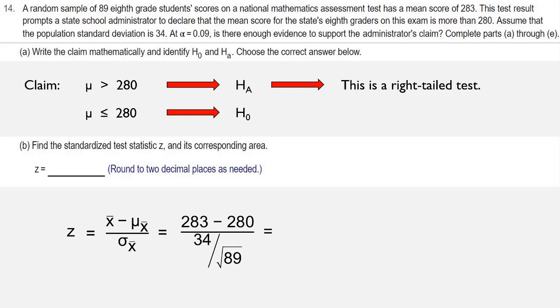When we use our calculator to compute this, we end up with 0.8324100999, rounded to two decimal places it is 0.83. That is our z-score for the standardized test statistic.